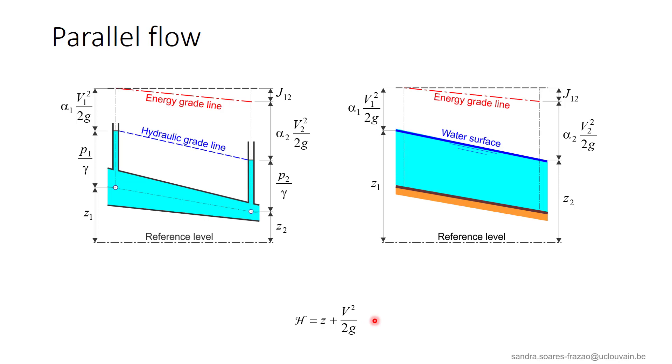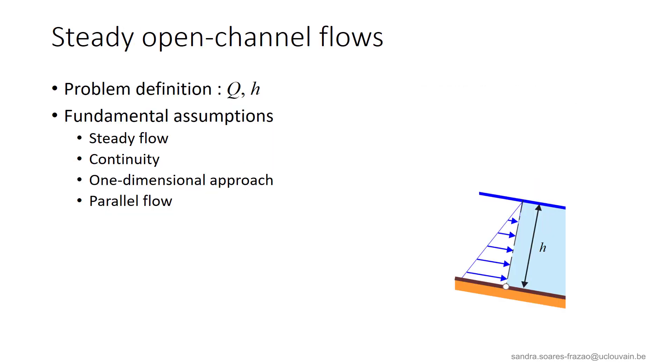And, according to the parallel flow assumption, the pressure distribution in the flow is hydrostatic. So, assuming a parallel flow results in considering that the pressure distribution in the flow is hydrostatic.